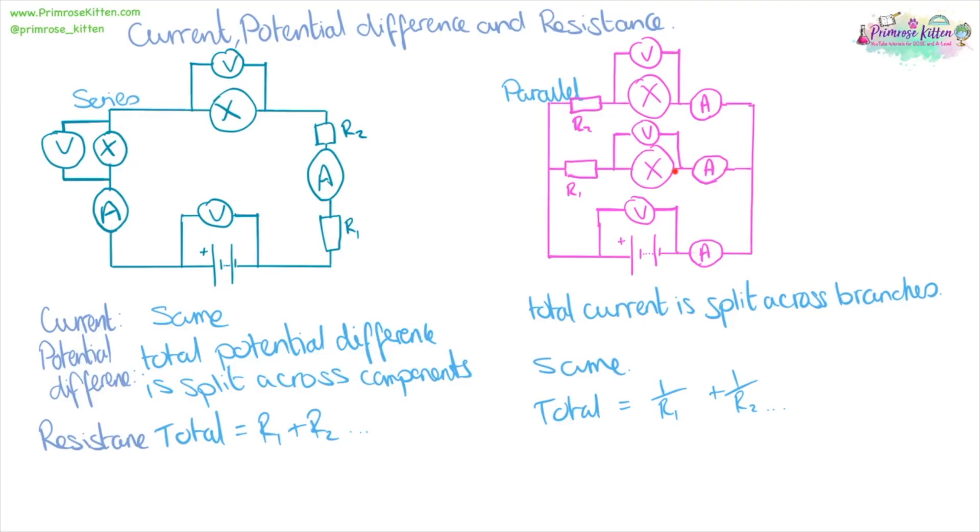On a parallel circuit, the current on each branch is going to be equal to the total current, but the potential difference on each branch is going to be the same. To find the total resistance, you need to do one over the resistance on each branch.